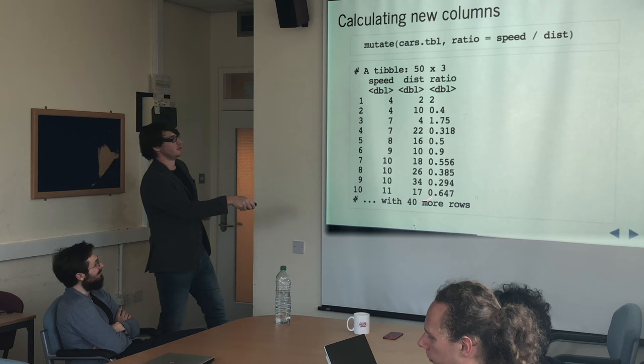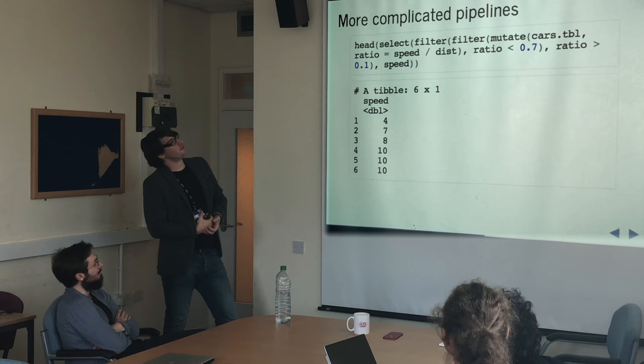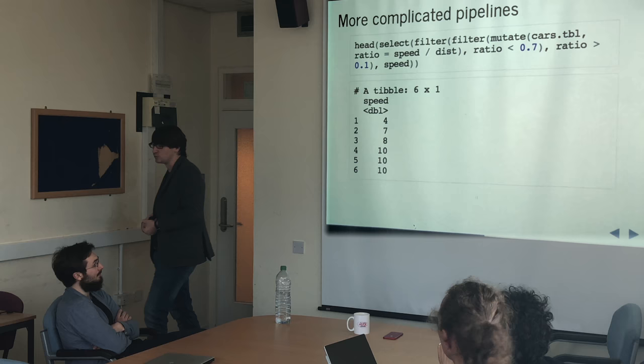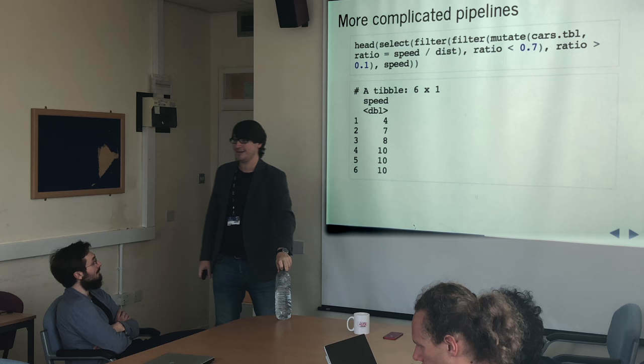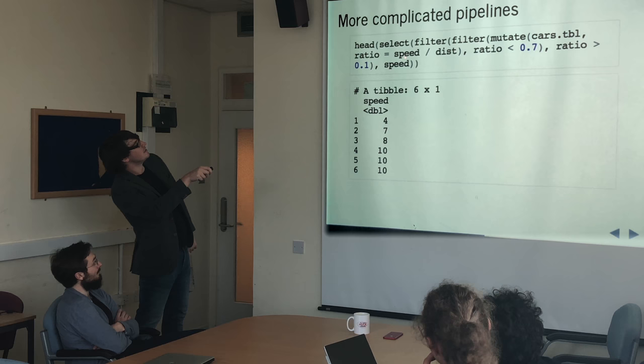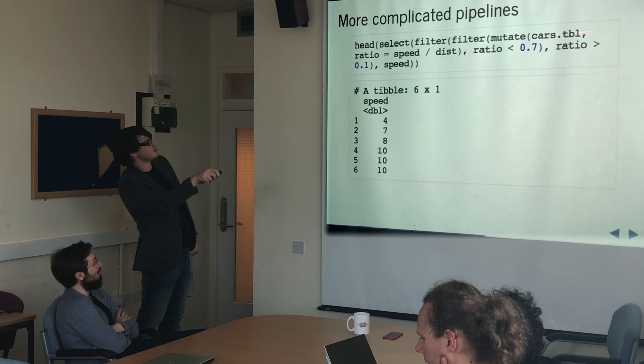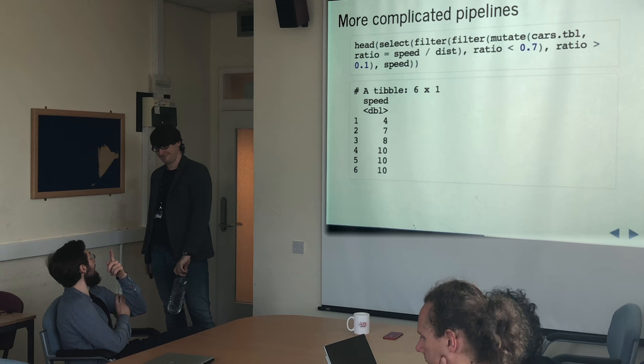Mutate: you can create new columns quite easily. What you can do is build up messy, complicated pipelines where you're trying to do lots of different things one after the other — data coming in one end, data coming out the other. The problem with nested function calls is it's messy. Even as a computer scientist who likes to think inside out, you can see it starts with cars table, then mutates it, then filters a couple of times, then selects something, then takes the head. It's backwards.